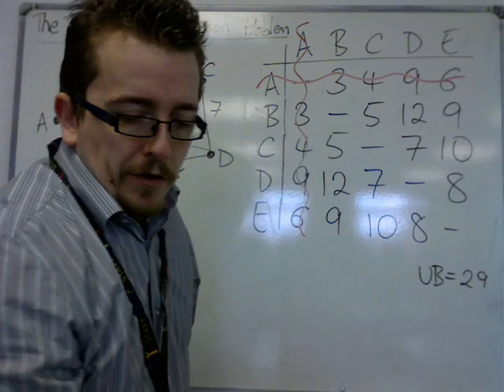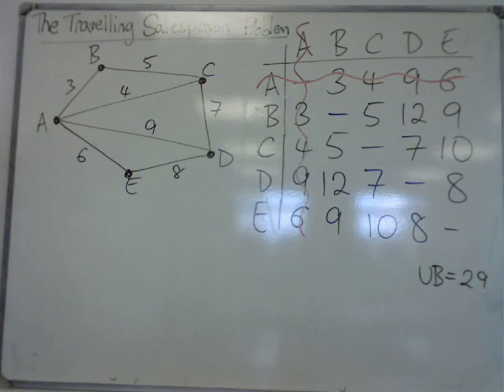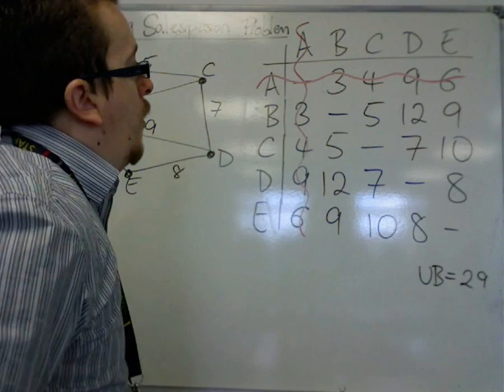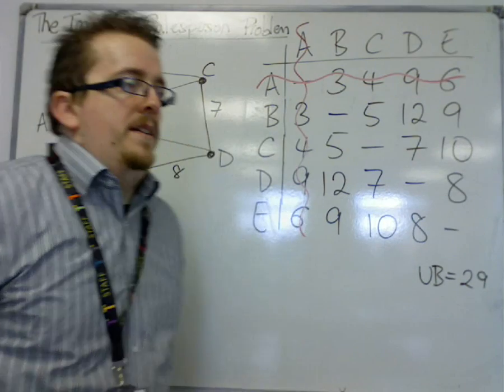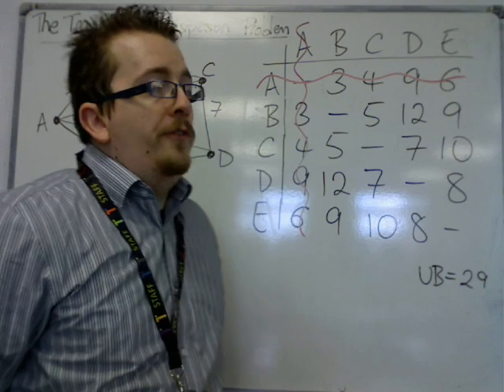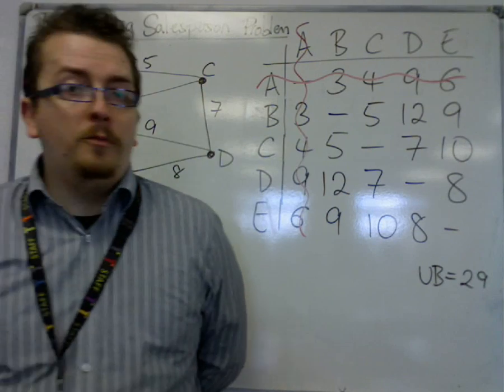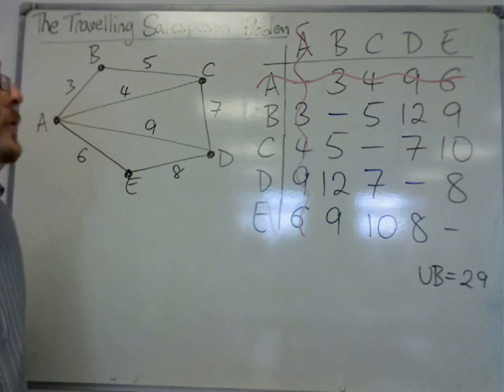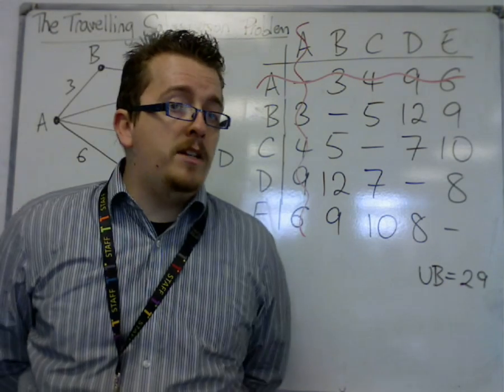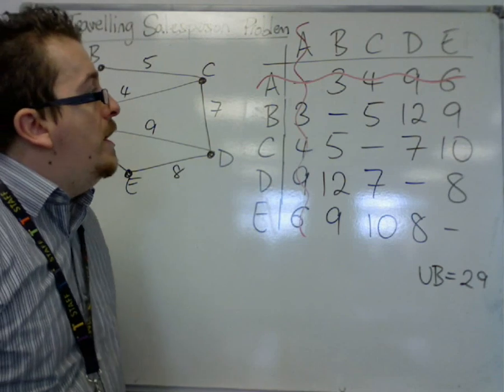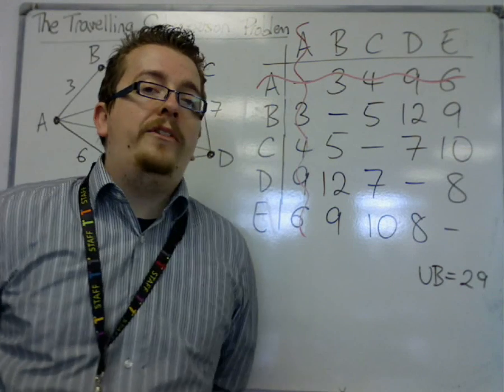What we then have to do is we then find a minimum spanning tree on what is left. Now we have two algorithms that find us a minimum spanning tree. If you remember, one was Prim's and one is Kruskal's. Now the easiest to do in this case, because we have a matrix, is Prim's. So we are going to do Prim's on what is left.